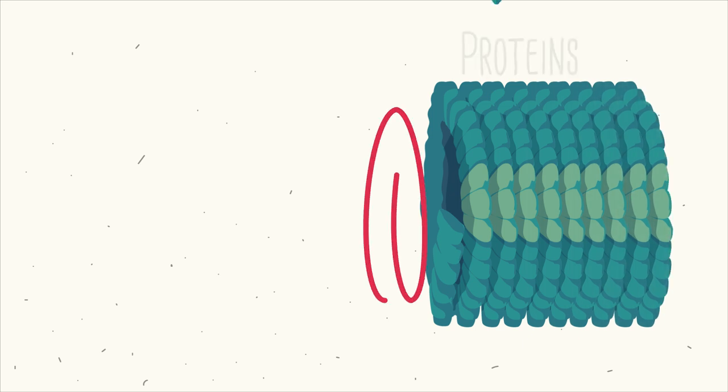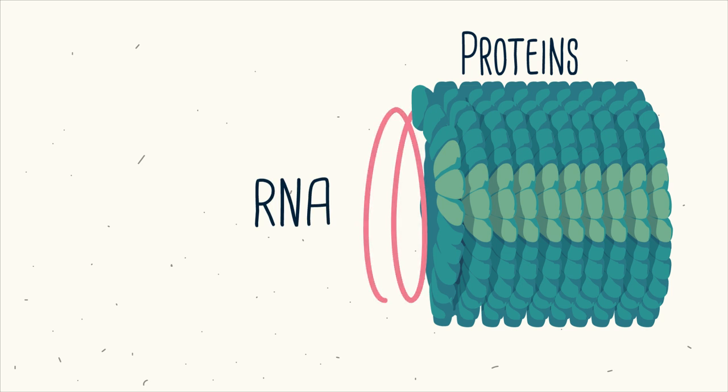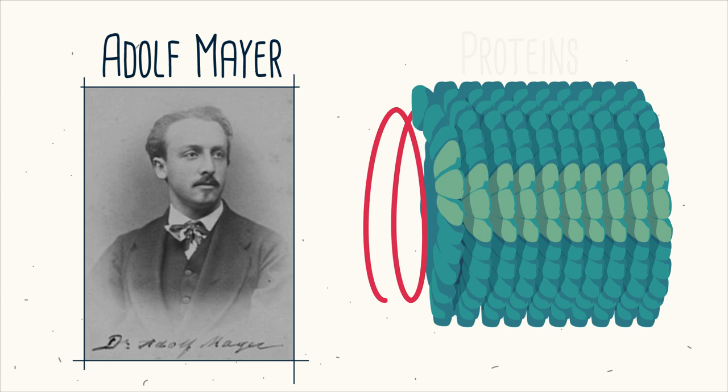A classic virus is the tobacco mosaic virus, or TMV. It has a rod-like structure consisting of a coat of proteins positioned helically around a single strand of RNA, and was actually the first virus to be described by Adolf Mayer.